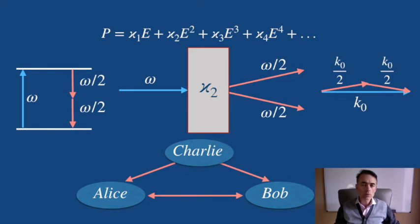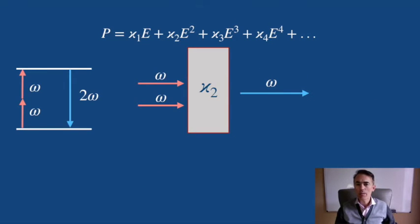We have also seen that two photons of frequency omega can be transformed into a single photon of frequency two omega by interacting with the non-linear medium. This is second harmonic generation.